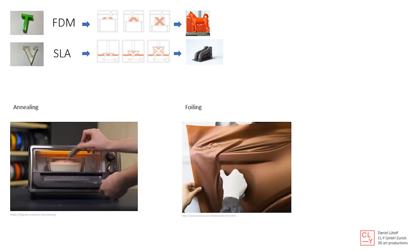A less common technique is annealing the 3D parts, which works only with FDM. You heat up the parts and the molecular structure of the 3D print changes and hardens the part. However, the part changes its original form, so you have to be sure you don't need it in the original shape. Another thing that happens a lot with large parts for automotive or industrial use is foiling — covering the parts with different color films to get a really nice smooth surface.